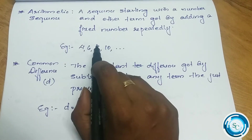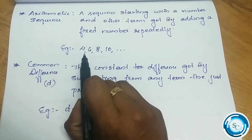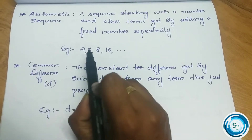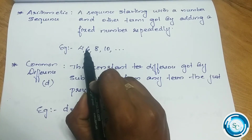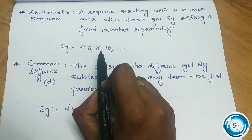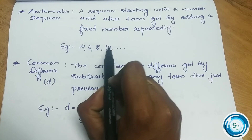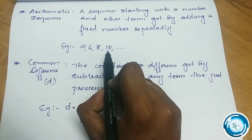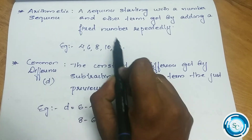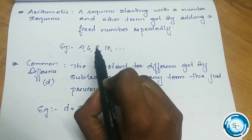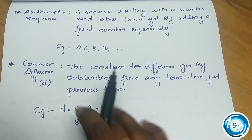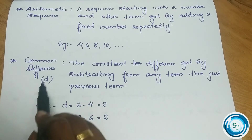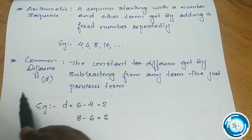For example, the sequence 4, 6, 8, 10 has a difference of 2 between terms. This constant difference makes it an arithmetic sequence. This constant difference is called the common difference, denoted by d.